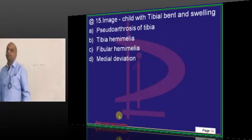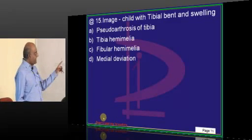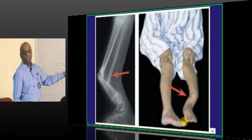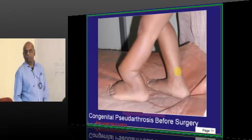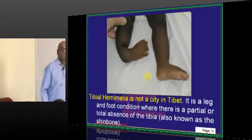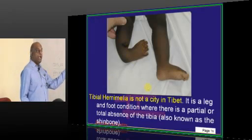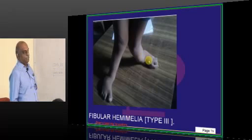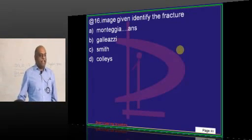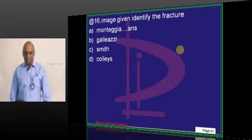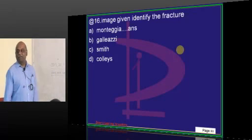A tibial bend with swelling - this is an example of pseudoarthrosis. Congenitally, people may have pseudoarthrosis. Tibial hemimelia is the absence of the tibia; similarly fibular hemimelia is absence of the fibula. There are 30-40 completely out-of-the-box questions in these exams that are not fully in your control. Your preparation is for 140 out of 200, and 30-35 questions are common sense.